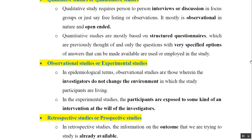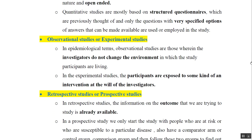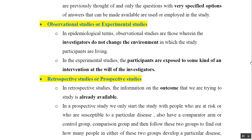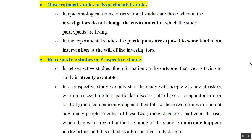The third type of classification is retrospective and prospective studies. In retrospective studies, the direction of the study is from outcome to exposure — information on the outcome is already available, and we want to find out what kind of exposure the participant has undergone. In prospective studies, the outcome happens in the future; what we know is whether the two groups are exposed to a particular factor or not.